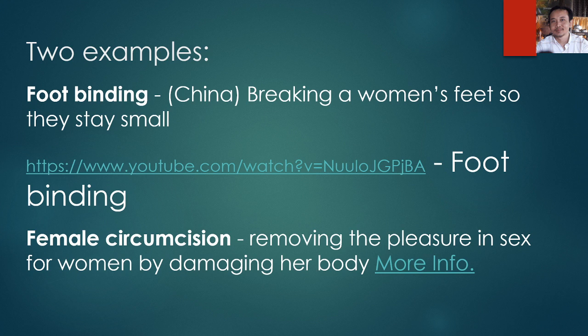Female circumcision involves removing the source of sexual pleasure for females by damaging her body. This is common in parts of sub-Saharan Africa and in some parts of Malaysia and Indonesia. It is also called female genital mutilation by Westerners. If you want to know more, additional information is available via the provided link.